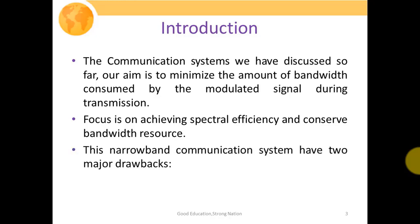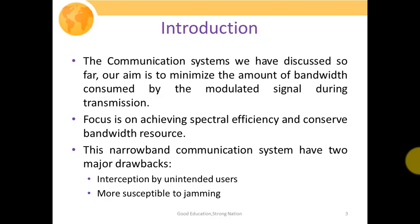This narrowband communication system has two major drawbacks. Number one is interception by unintended users, and the second one is being more susceptible towards jamming. By interception, we mean there are certain users who are not supposed to hear the conversation between two parties, but intentionally they intercept and fetch information they are not supposed to hear. By jamming, we mean that people would not be in a state to communicate — their communication system will become non-operational. Jamming is performed with the help of jammers generating a narrowband signal in opposite phase, causing destructive interference at the receiving side so the receiver cannot extract the information signal properly.